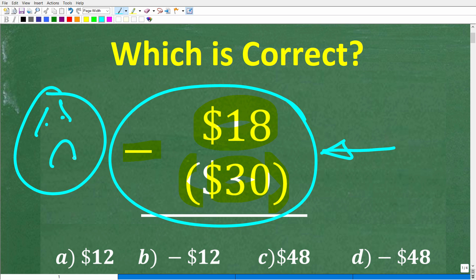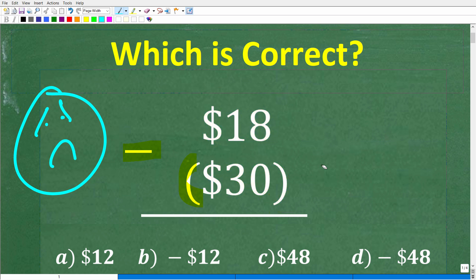Now, of course, I'm going to tell you what that is in just one second. But first, I'm going to give you an opportunity to solve this problem without using a calculator. So once again, we have $18 minus $30 in parentheses, and I am kind of emphasizing these parentheses.